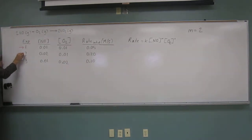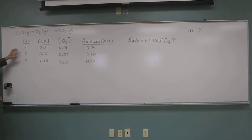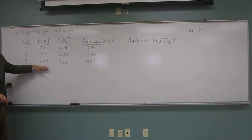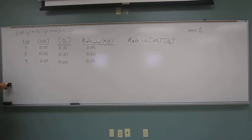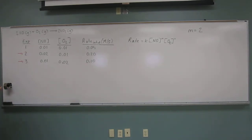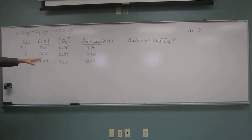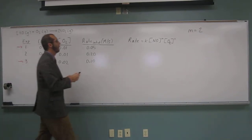Now that we've found M, we're going to look for N. We need experiments where NO stays the same and O₂ changes. That would be experiments 1 and 3. We'll put 3 on top since it's larger. K doesn't change with experimental conditions, so it cancels. NO didn't change between experiments 1 and 3, so those terms cancel as well.